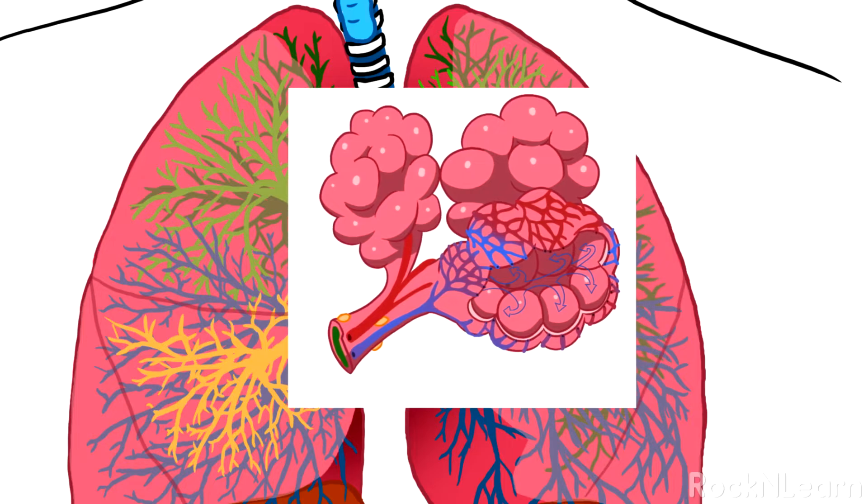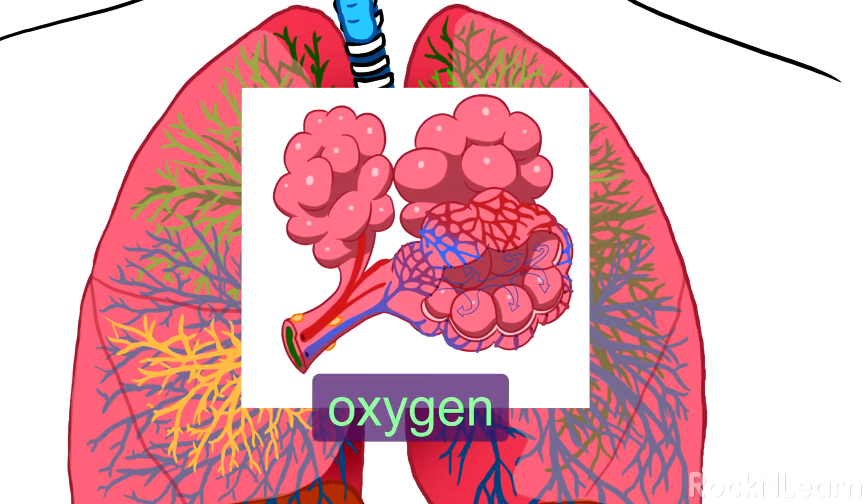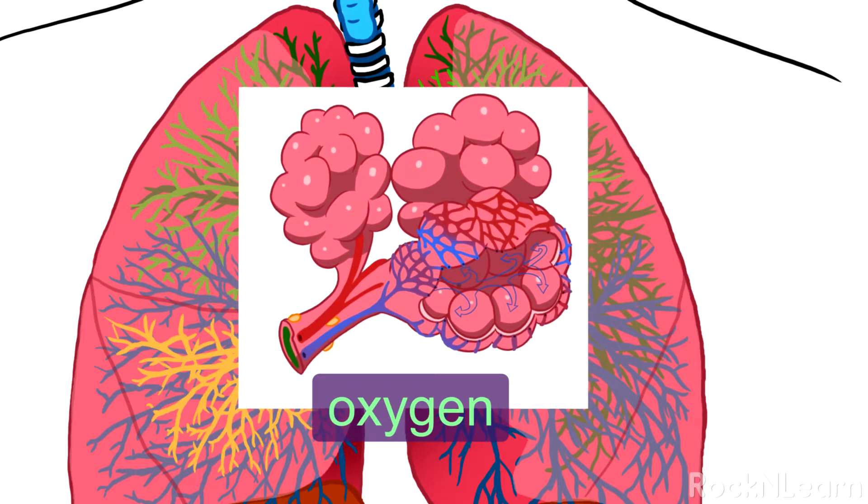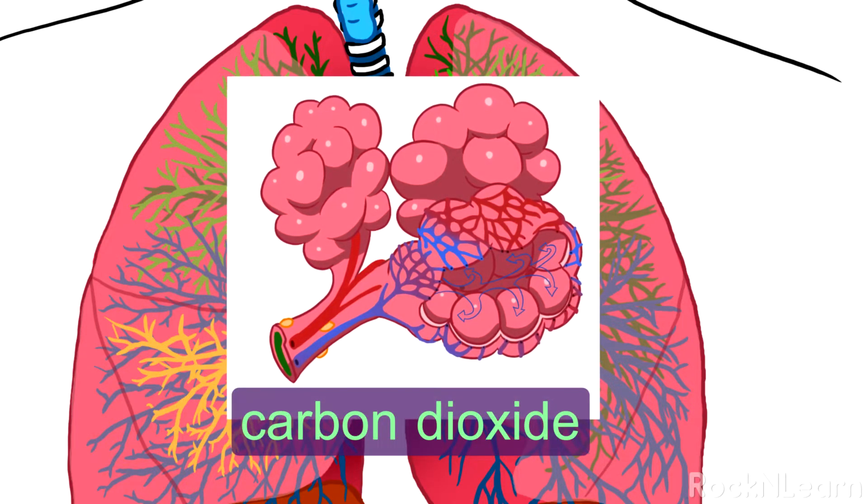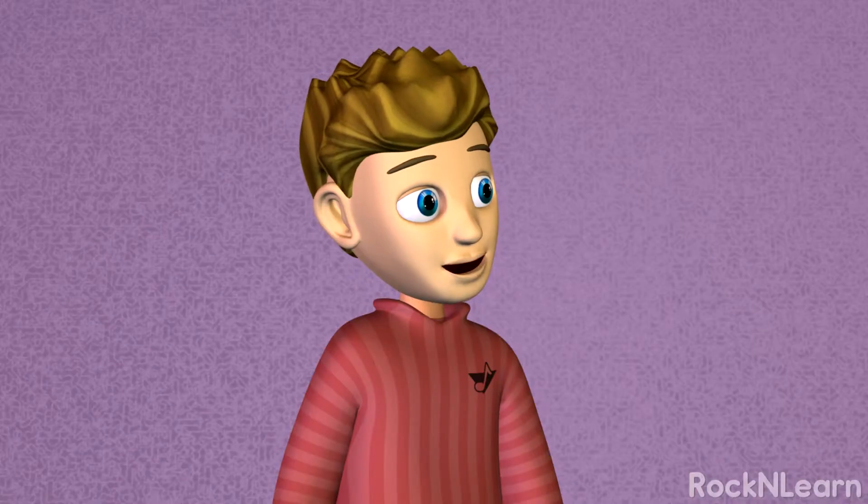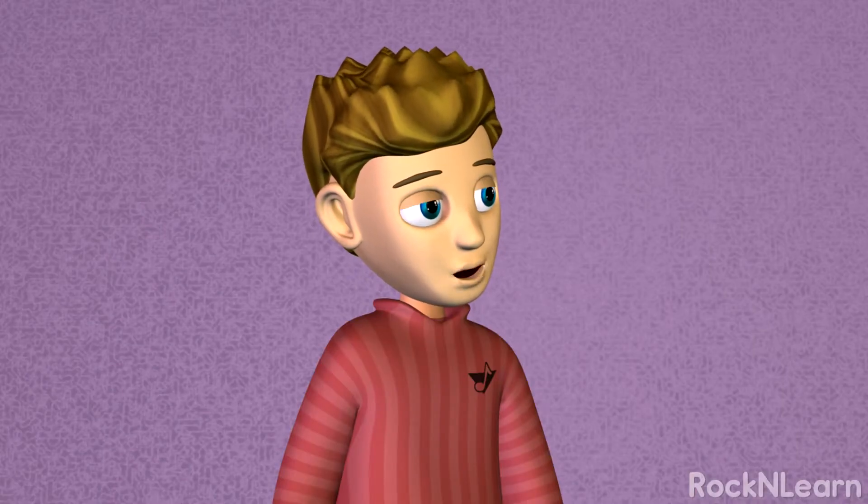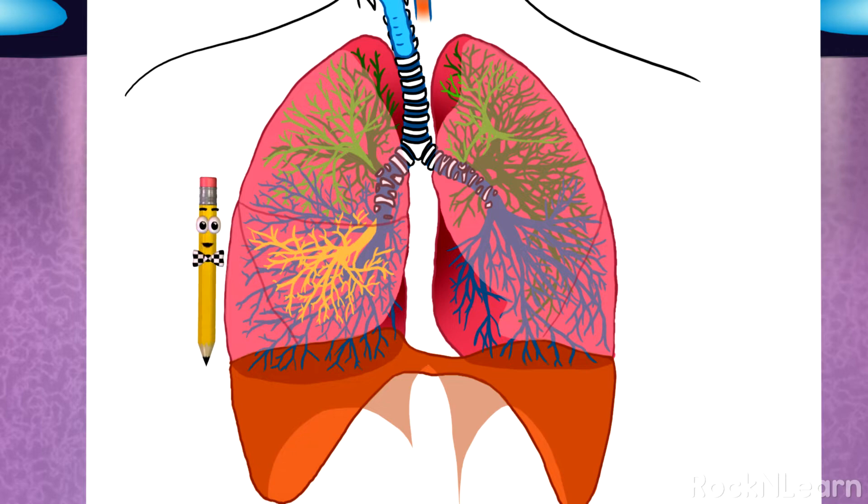The alveolus is the pickup place for oxygen, which the cells in your body need to work, and also the drop-off place for carbon dioxide, which is a waste product from your cells. Hey! That's the exact opposite of what plants do! Smart boy! I like the way you think!